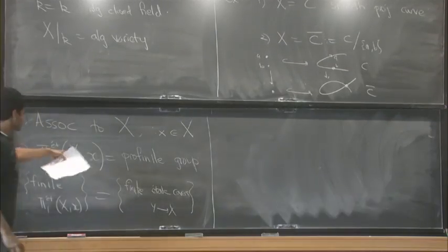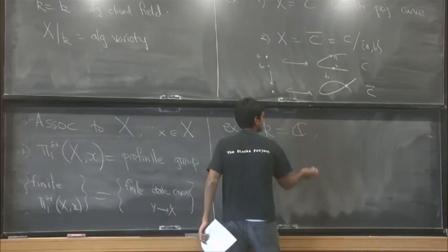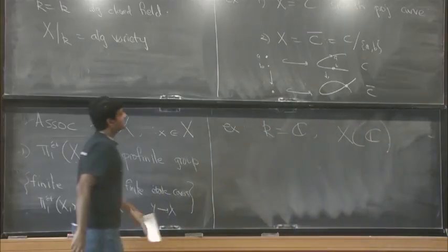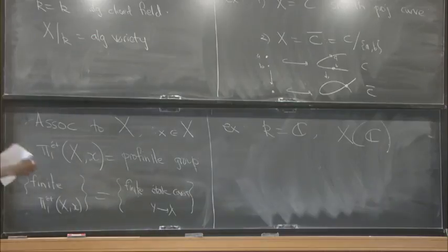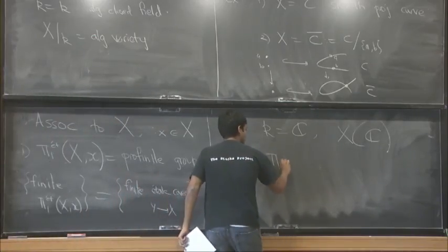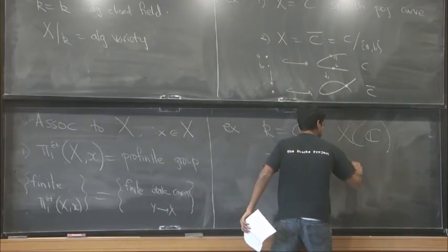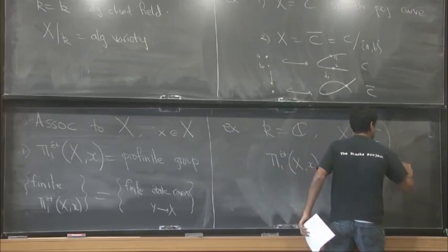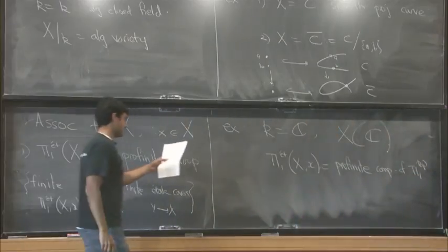And so what does this group look like? So the basic theorem is that if you're working with the complex numbers, then you have this space X of C. So it's the variety X thought of as a complex variety now, so it's an honest topological space in the Euclidean topology. And then the theorem is that this group, which is purely algebraically constructed, is the profinite completion of the usual one.